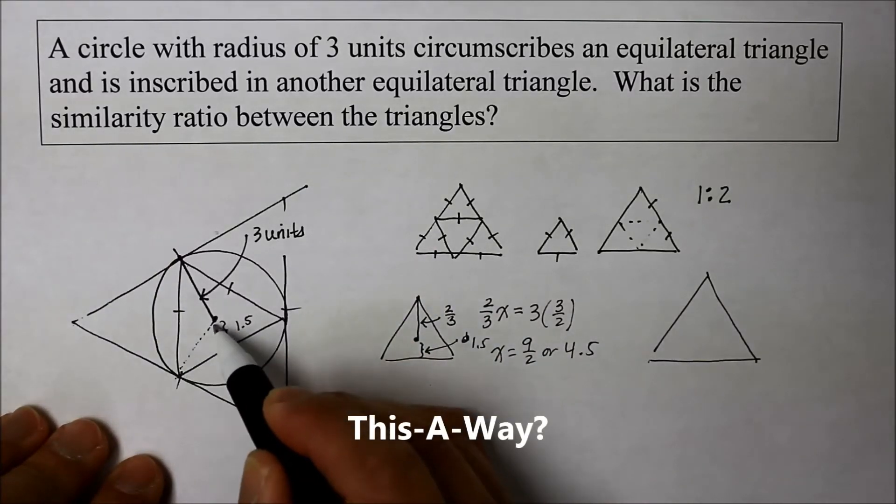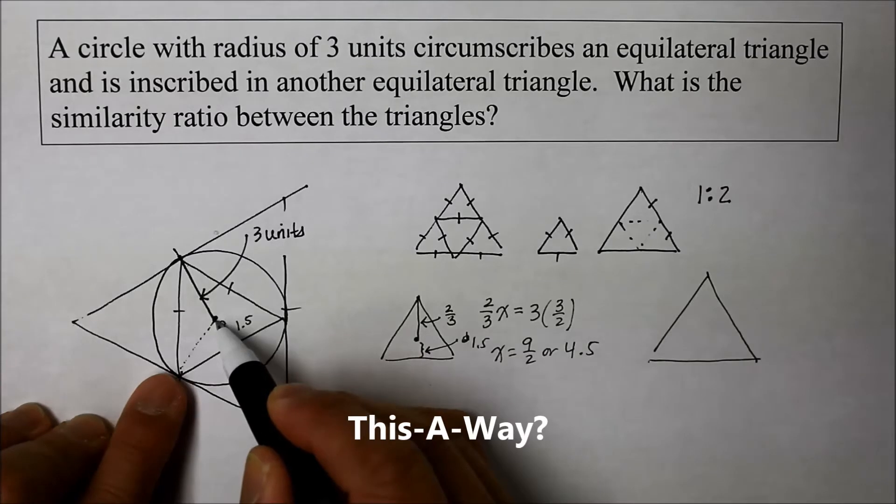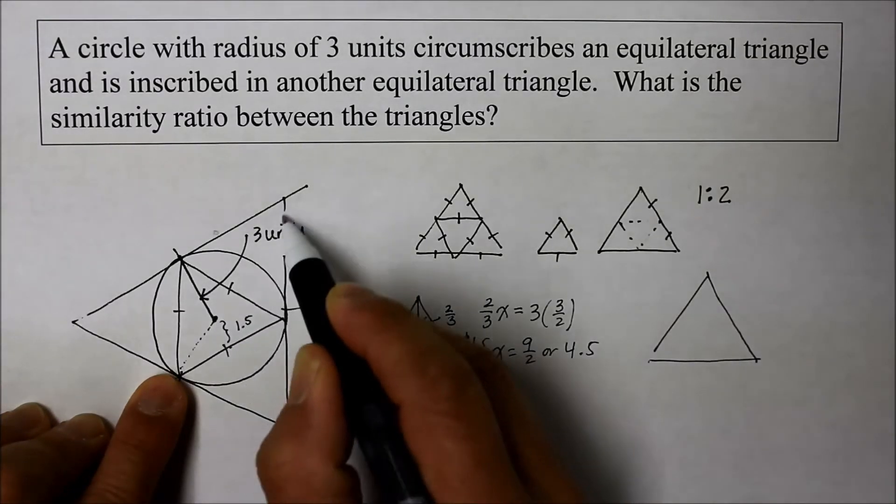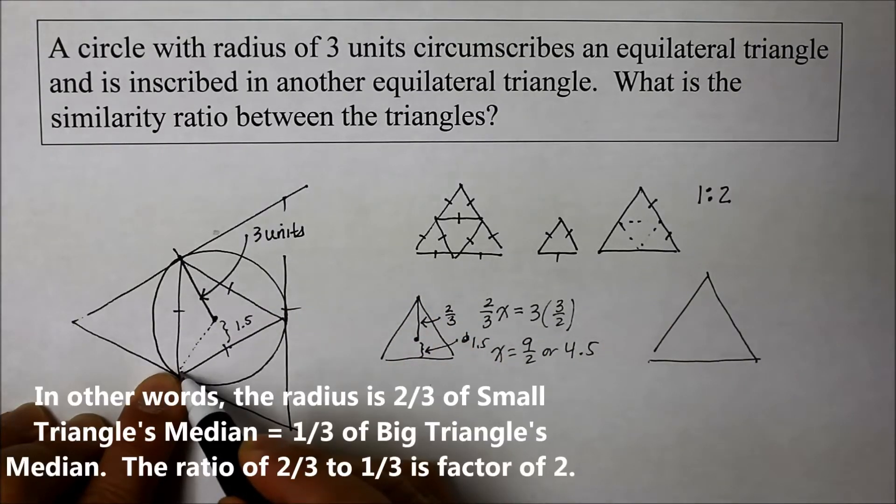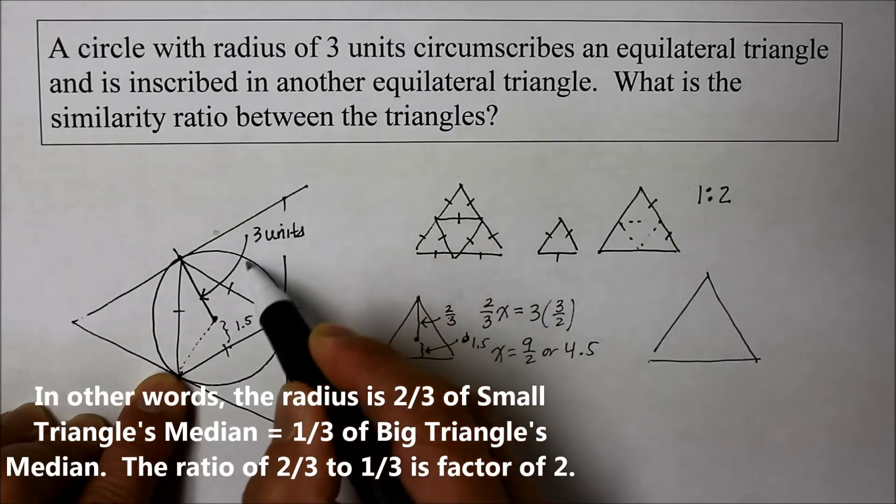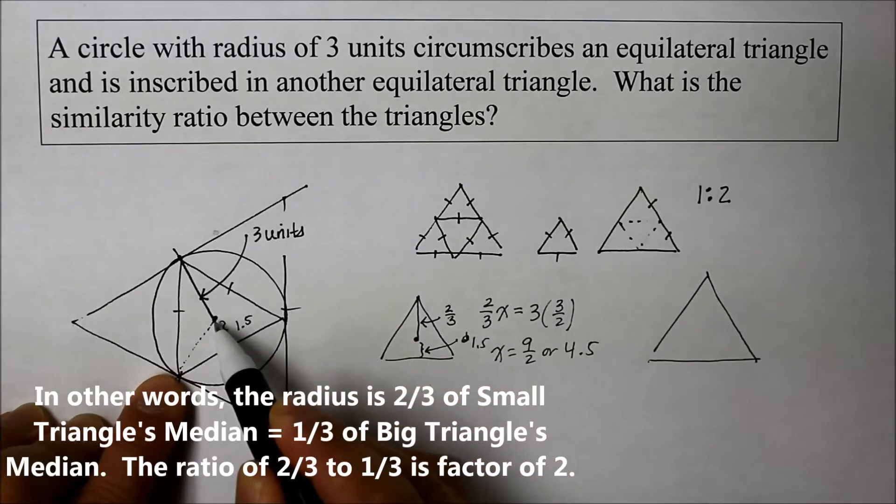that radius is now the one-third of the median that goes from the vertex of the bigger triangle to the midpoint. So this is the median now. And that radius is actually just one-third of it.